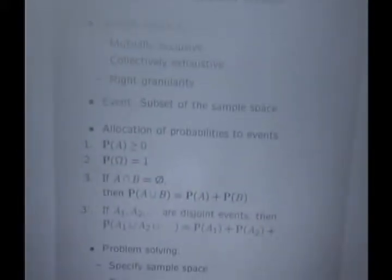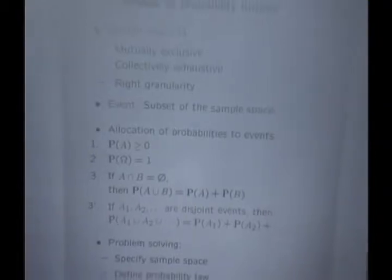Our quick review. In setting up a model of a random experiment, the first thing to do is to come up with a list of all the possible outcomes of the experiment. So that list is what we call the sample space.